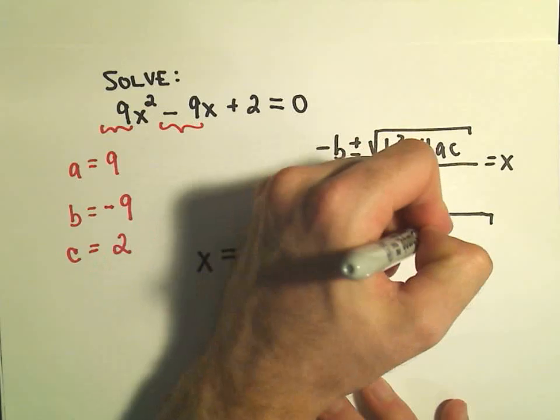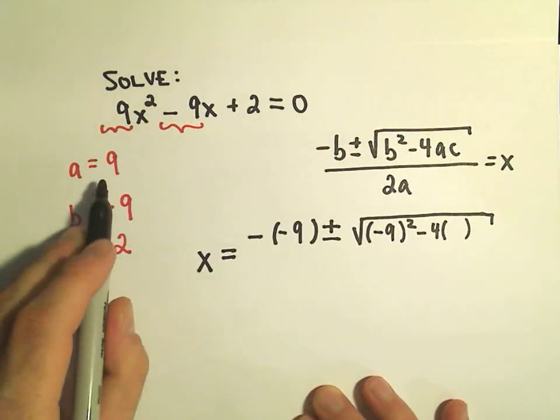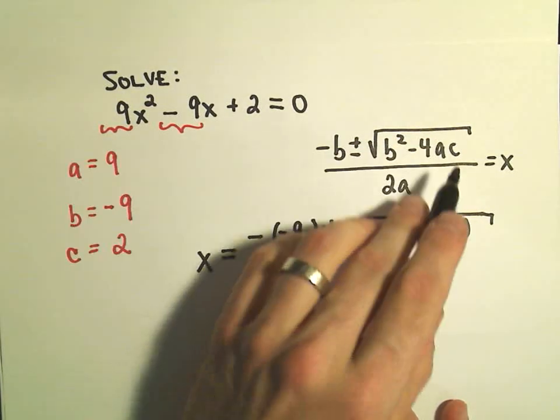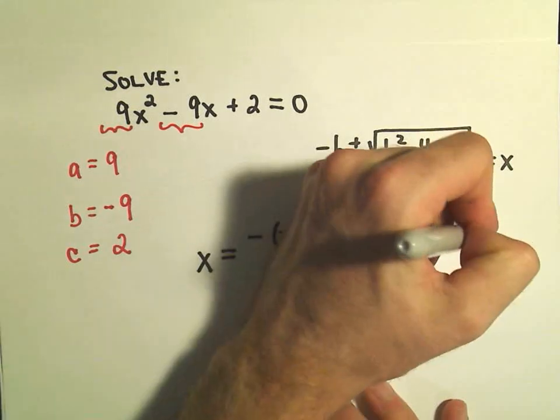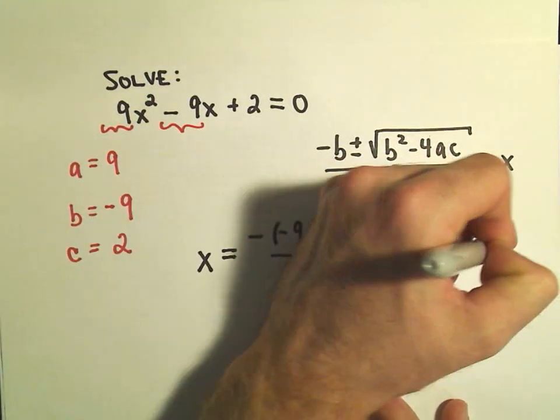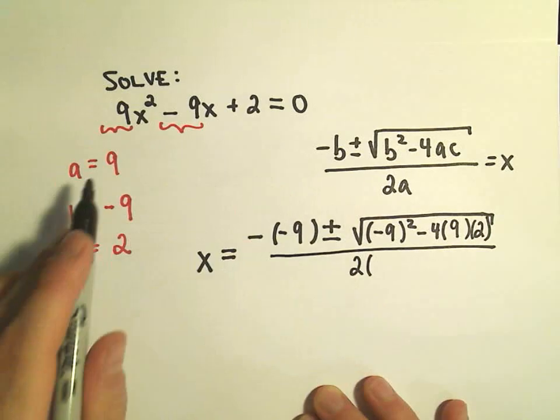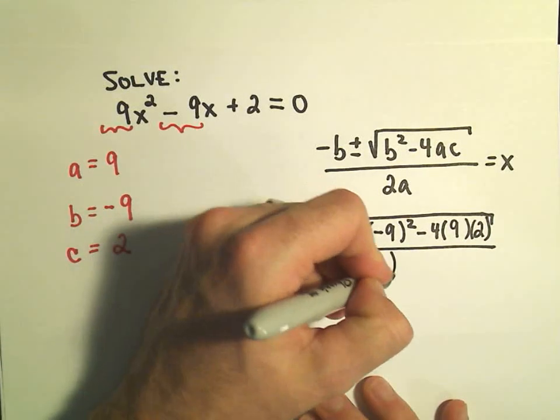And then we subtract 4 times a, which we set as positive 9, times c, which we set as positive 2, and then we divide all of that by 2 times a, and again a is just positive 9.